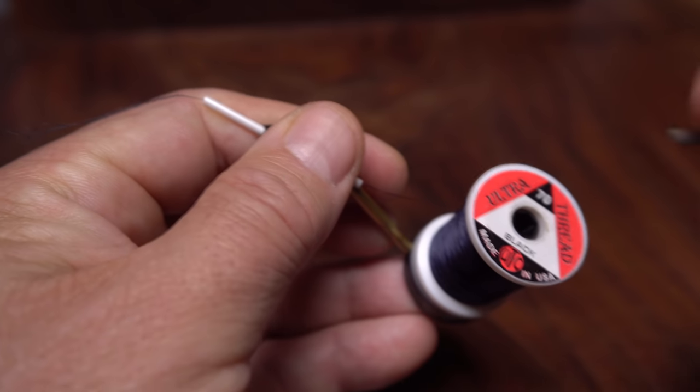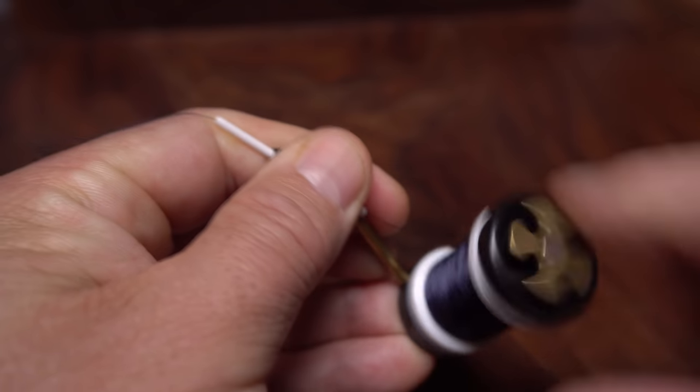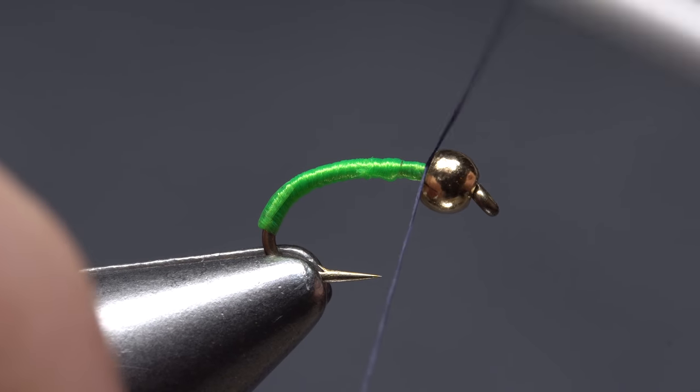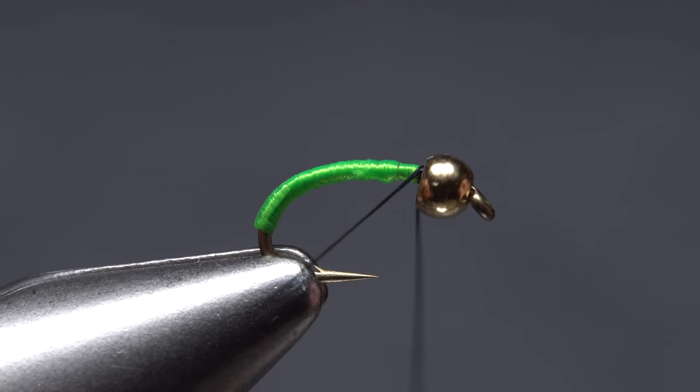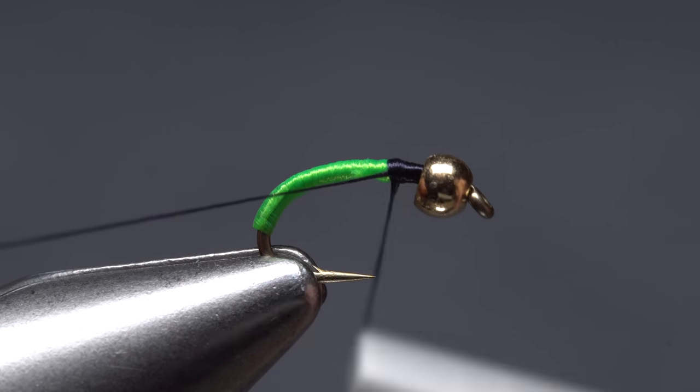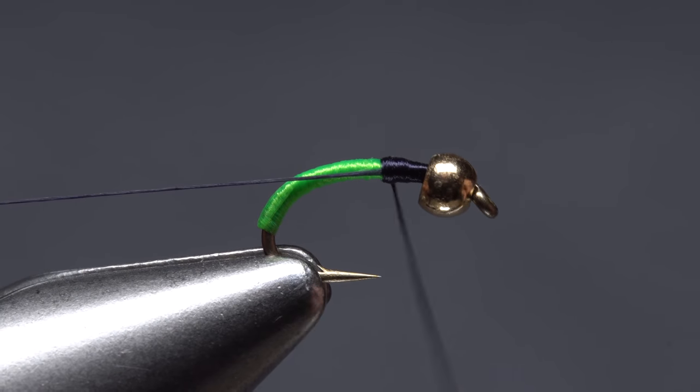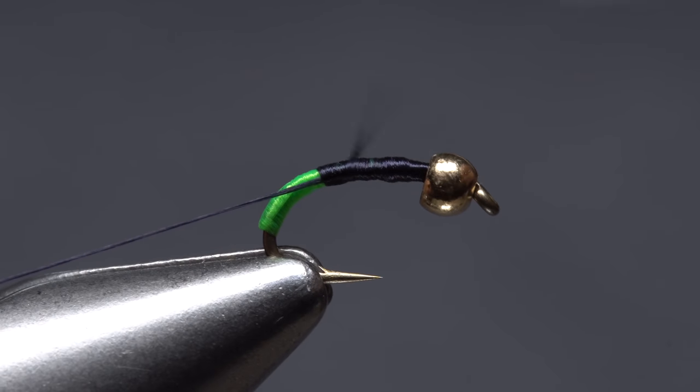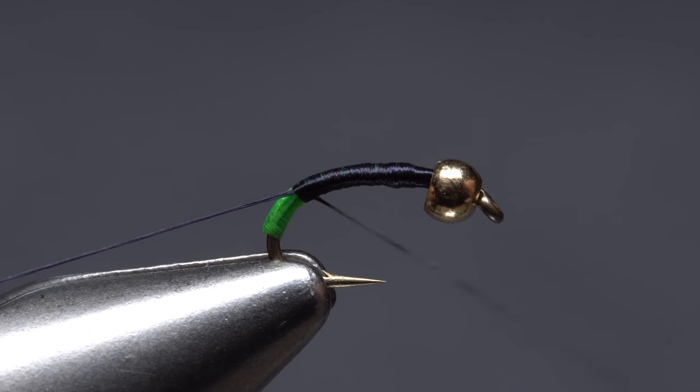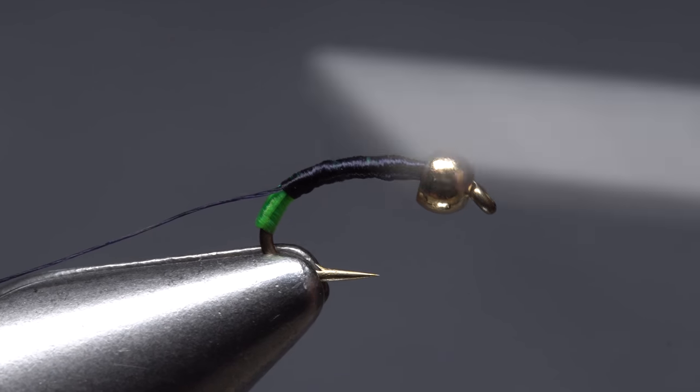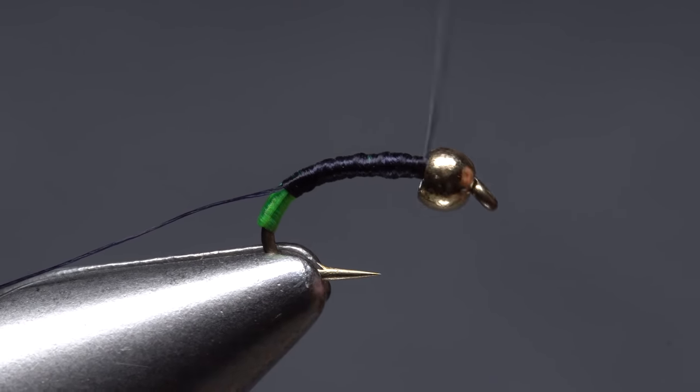Now load a bobbin with a spool of black UTC 70 denier, which will be used for the rest of the fly. Once again get the thread started on the hook shank behind the bead, but this time leave an even longer tag, one that's maybe 5 or 6 inches in length. Continue taking rearward wraps of tying thread, binding the tag end to the near side of the hook as you go. Leaving about an eighth of an inch of green butt showing, wrap the black thread forward all the way back to behind the bead.